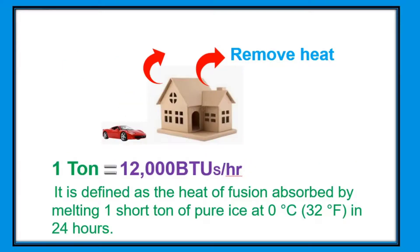1 BTU is the energy needed to heat or cool one pound of water by one degree Fahrenheit at sea level. A ton of refrigeration is a unit of power used to describe the heat extraction capacity of air conditioning and refrigeration equipment. It is defined as the heat of fusion absorbed by melting one short ton of pure ice at 0 degrees Celsius or 32 degrees Fahrenheit in 24 hours.